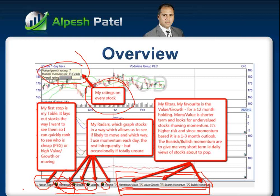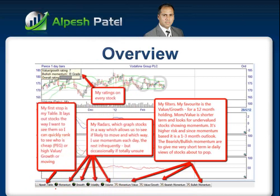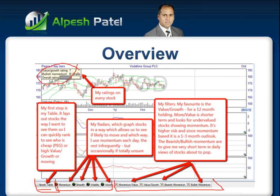So that's just the overview of all the bits. You're familiar with the bits here. Let me just recap: that's the table, then we've got the radars, then we've got the filters. I'm going to go through each one of those in turn - what they do and how I use them. And then finally you've got the ratings for every stock, which is for a 12-month holding for those looking at undervalued stocks showing good growth prospects.